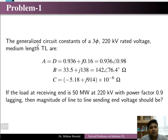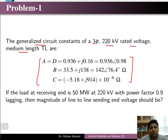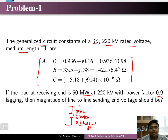The first problem: given the generalized circuit constants (ABCD parameters) of a three-phase 220 kV rated voltage medium length transmission line, with a load at the receiving end of 50 megawatt at 220 kV and a power factor of 0.9 lagging, find the magnitude of the line-to-line sending end voltage.